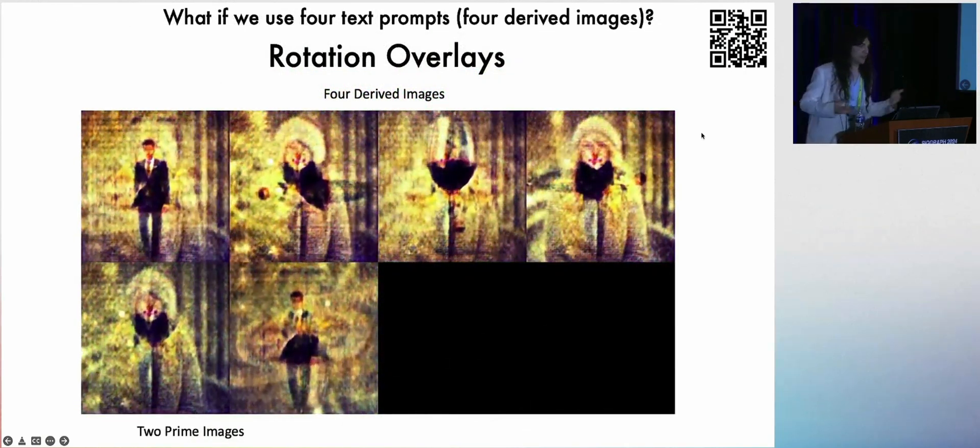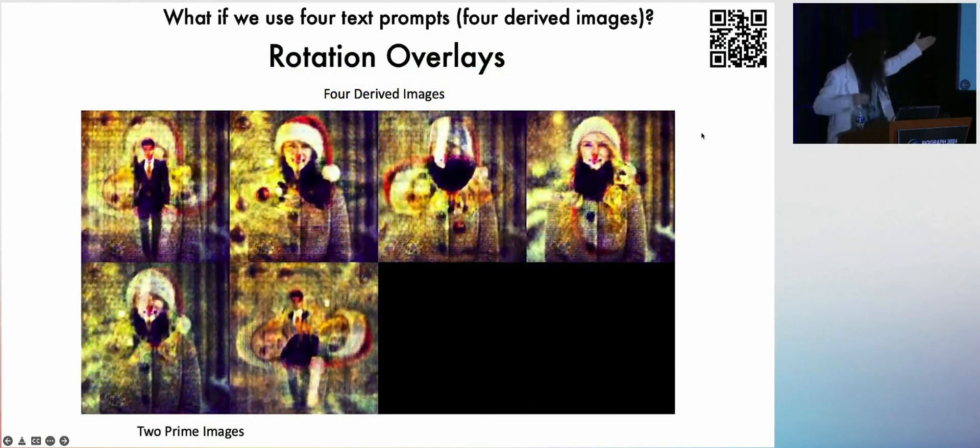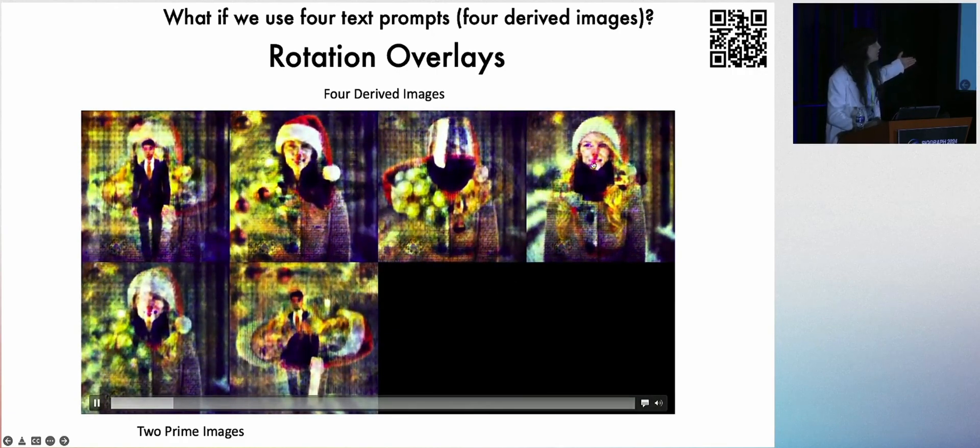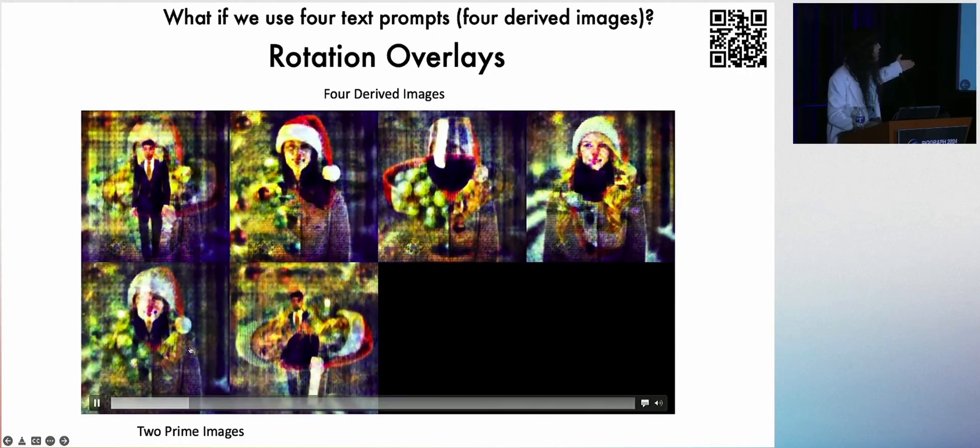And with rotation overlays, it's the same idea, but now the differentiable process is that we multiply these together at different rotations to derive the images on the top, giving these two prime images on the bottom.